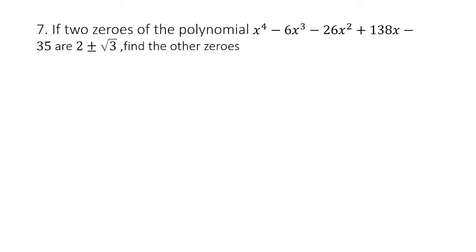This is the second question. If two zeros of the polynomial x to the power 4 are given, find the other zeros. Now the first thing to understand is how many zeros there are going to be. The highest power here is 4, so that means there are going to be 4 zeros.